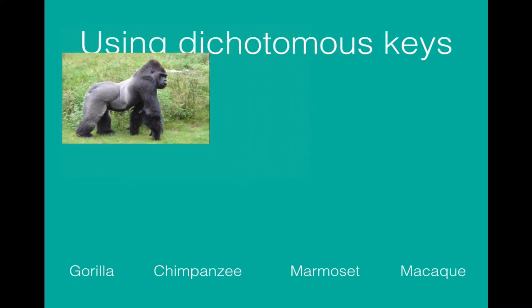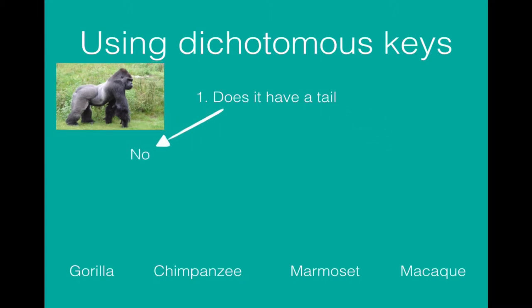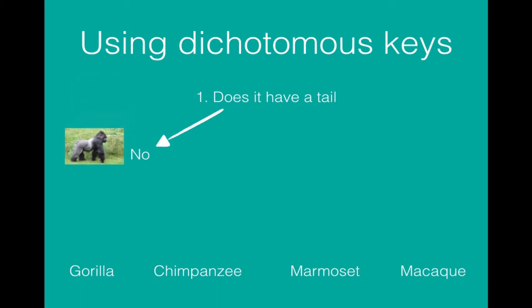The first question we ask is does this animal have a tail? Well, it doesn't. So we are going down the left hand side. And as a result we have discounted the marmoset and the macaque as possible outcomes for this species.